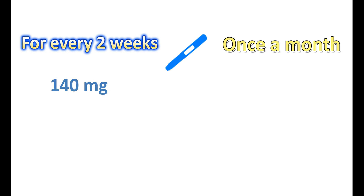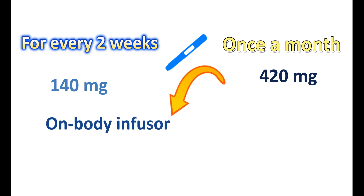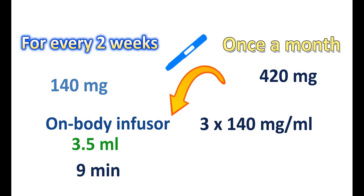When indicated for once a month, the dose is higher at 420 mg. This dose can be taken in two ways: using the on-body infuser, the 420 mg dose is delivered as 3.5 ml of solution within 9 minutes. Alternatively, this dose can be taken as three consecutive injections of 140 mg per ml within 30 minutes. Based on convenience, it can be taken as a single infusion or as three injections, but the total dose is always 420 mg once a month.